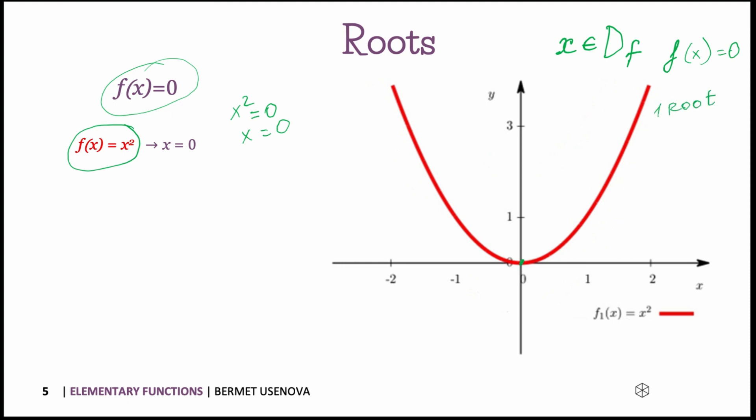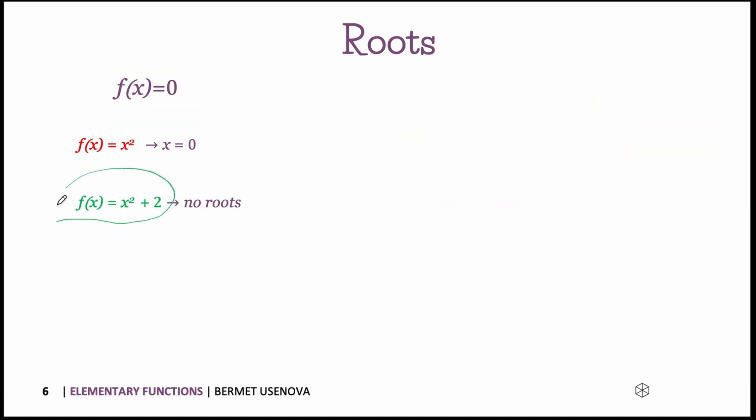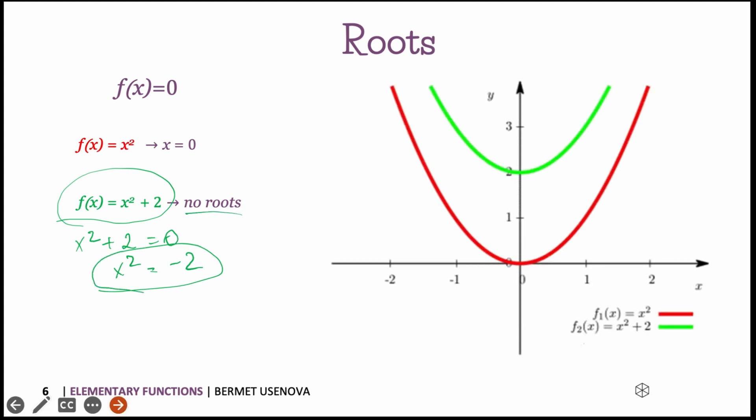We move to the next example, x squared plus two. If we try to solve it and find its roots, we will end up having something like this, which has no solution or no roots. Graphically, it would look like this. This is x squared plus two. So graphically it doesn't intersect with x-axis. That's why it has no root. It only intersects y-axis at point of two.